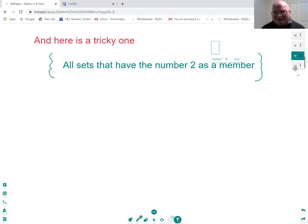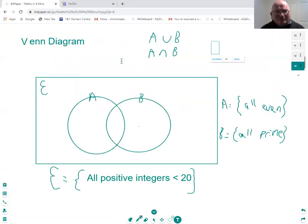So, let's have a little look at how we can often write down sets. A Venn diagram is a very useful way of displaying sets, because you can actually see how sets interact with each other.